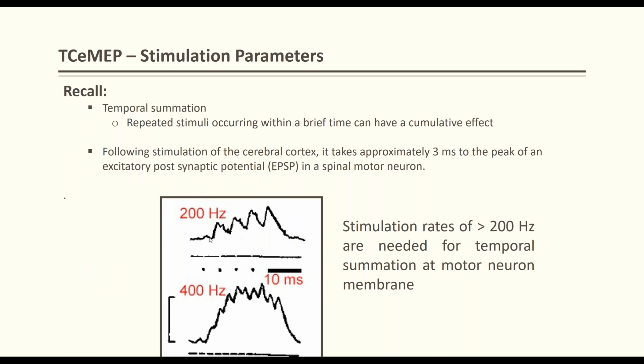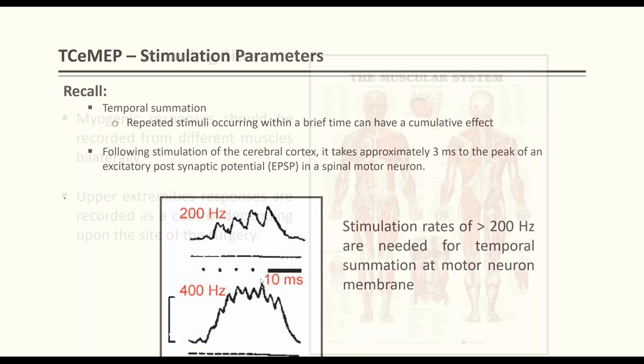The threshold of cortical neurons is 200 Hz. Stimulating below 200 Hz will not cause a reliable corticospinal response, but stimulating at 200–400 Hz produces much better responses.